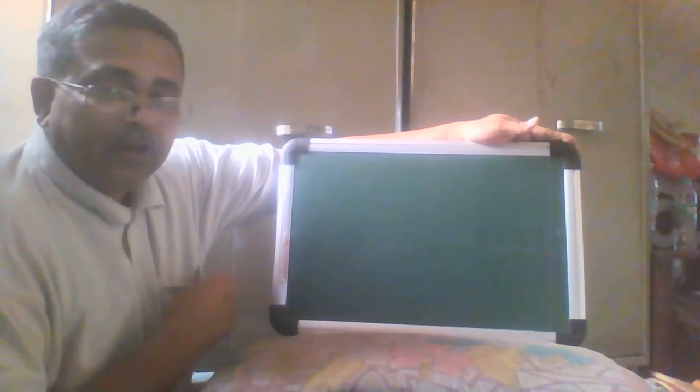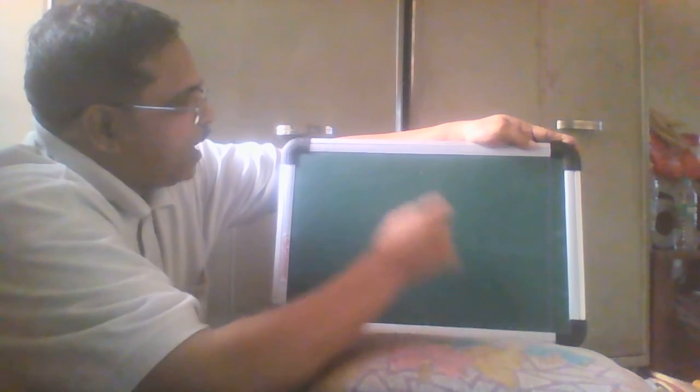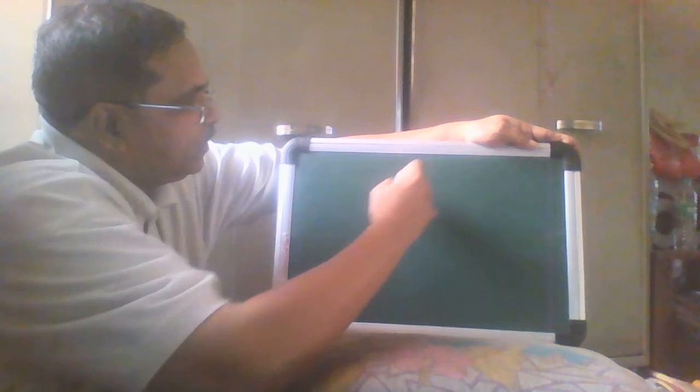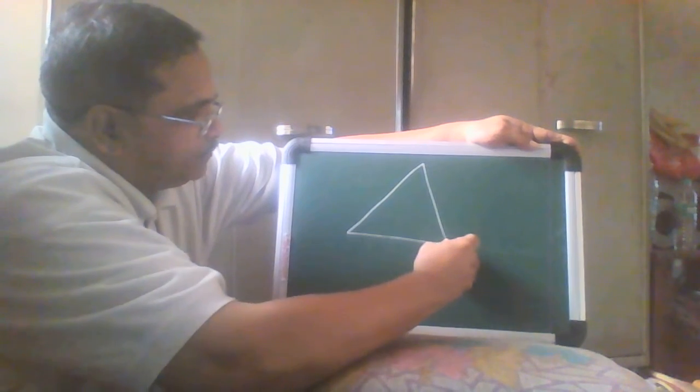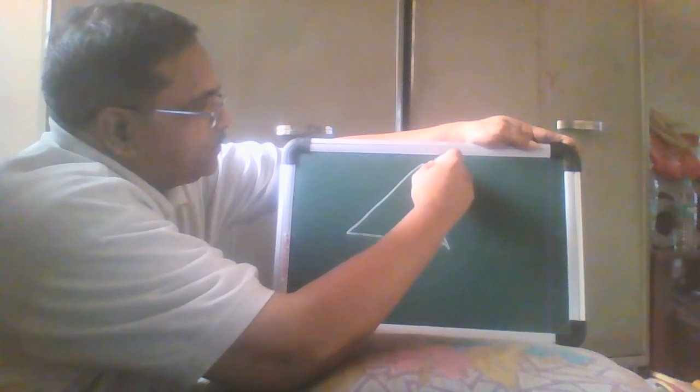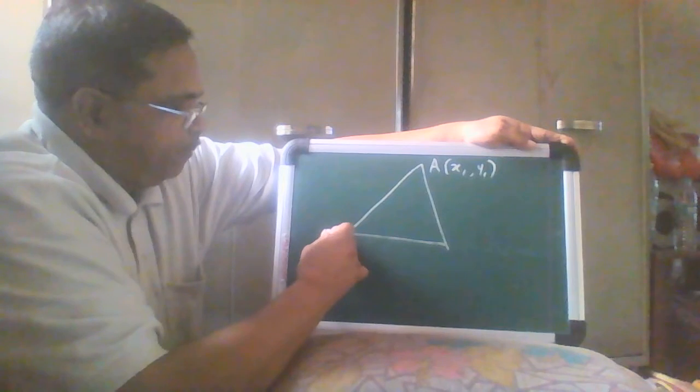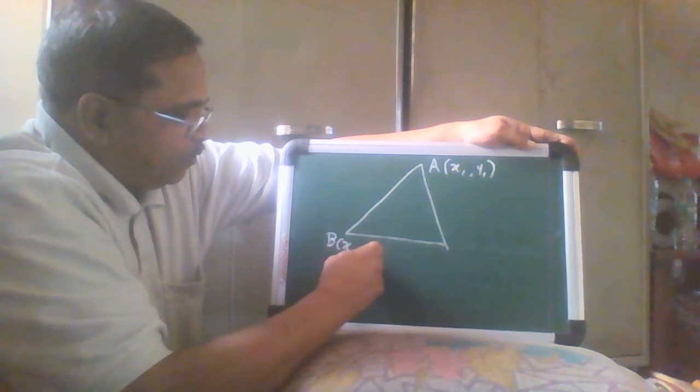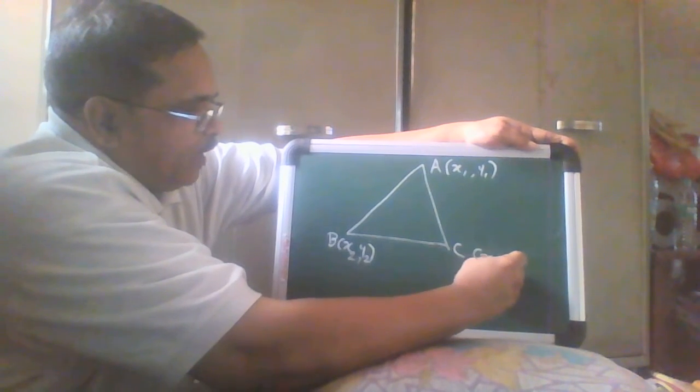Welcome to this session. Here I am trying to deliver you a video on coordinate geometry. The task is that here is a triangle, a general triangle, whose vertices are A: x1, y1, B: x2, y2, and C: x3, y3.